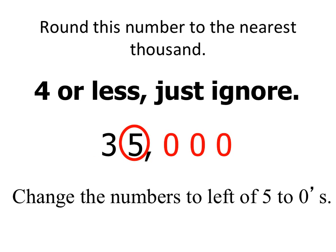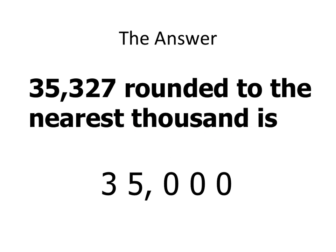The 3 stays, the 5 doesn't change, and everything else becomes 0s. So 35,327 rounded to the nearest 1,000 is 35,000.